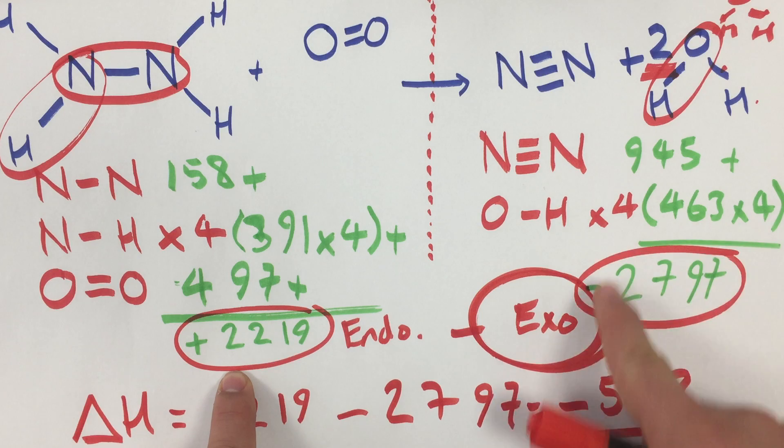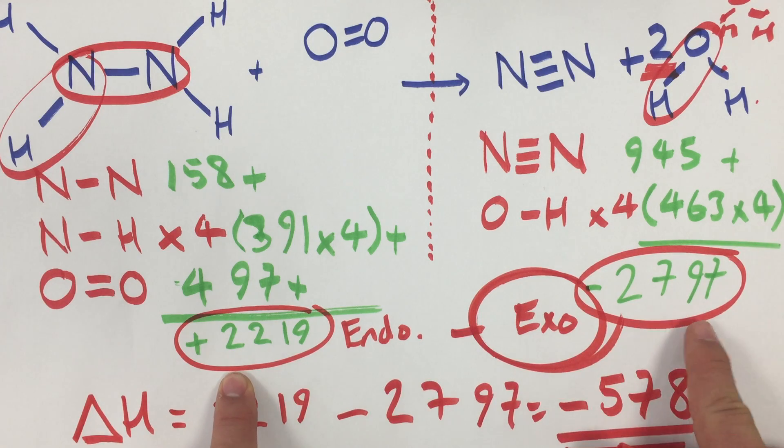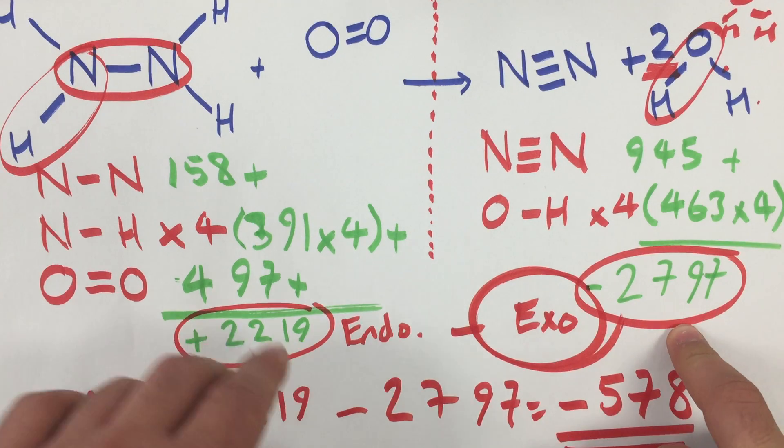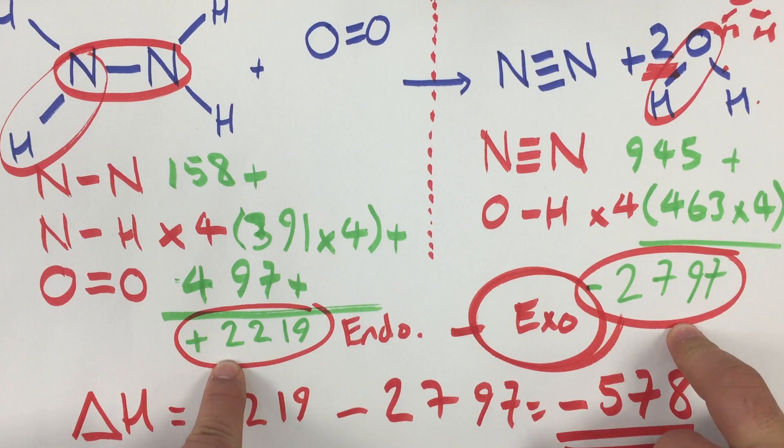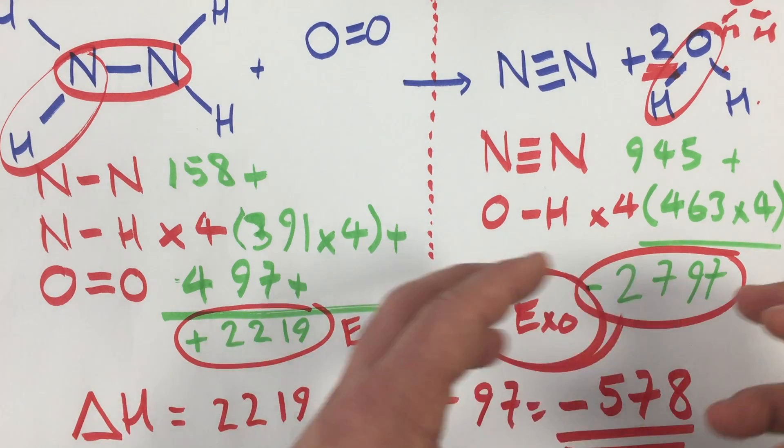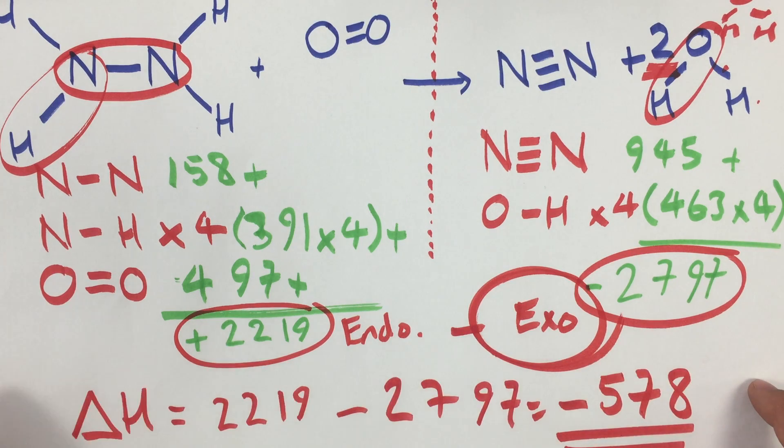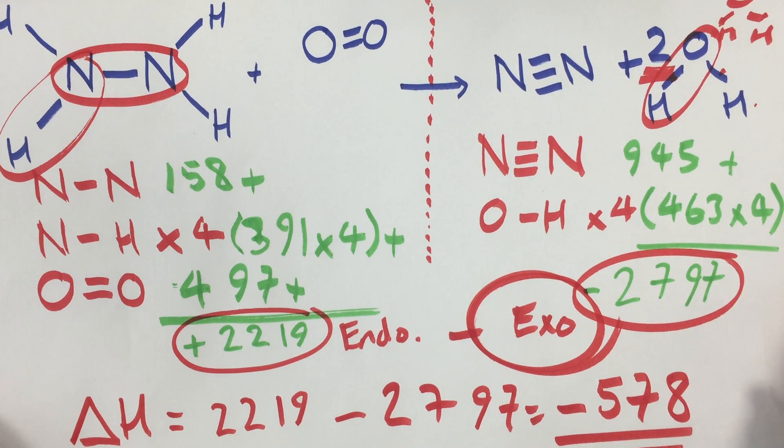Okay, overall it's exothermic. And if you look at these numbers, that should make sense because you can see the number on the right is bigger than the number on the left. And what that means is that I will get more energy released than I need to break the bonds in the first place. So overall I will get an excess of energy, so that will be released to the surroundings, and that's why it's exothermic. The temperature of the surroundings will go up.